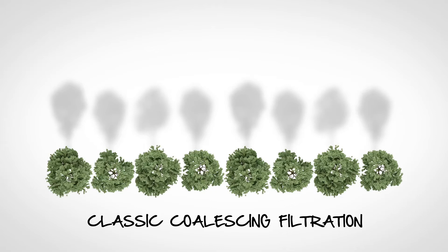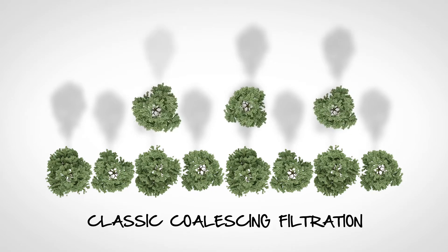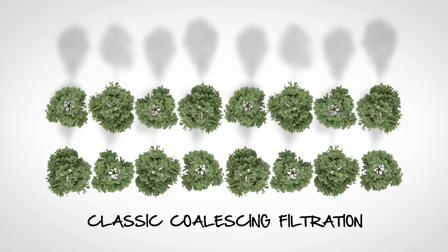In classic filters, these trees are placed together as closely as possible. Generally, at least two rows of trees are needed to ensure maximum efficiency.